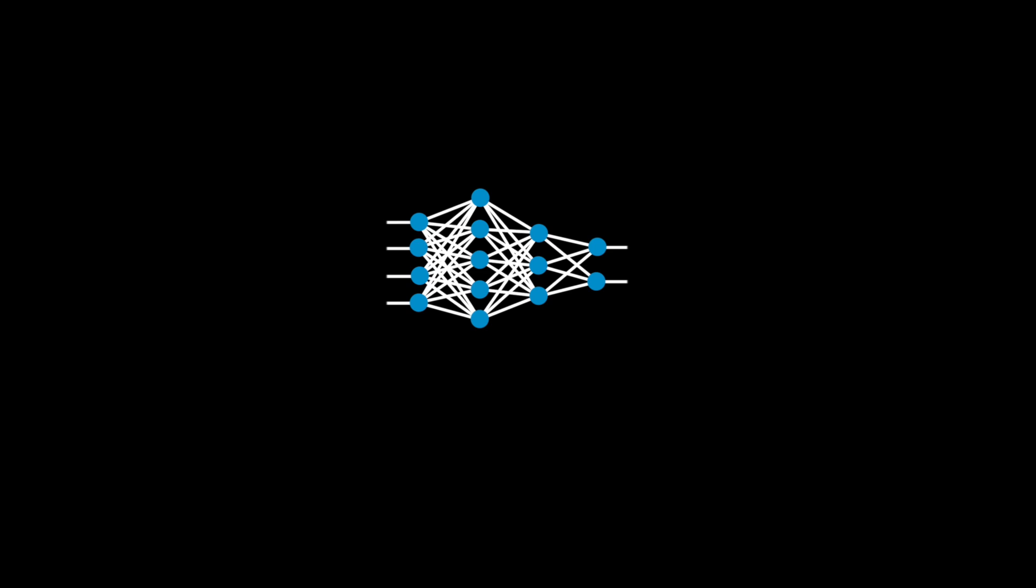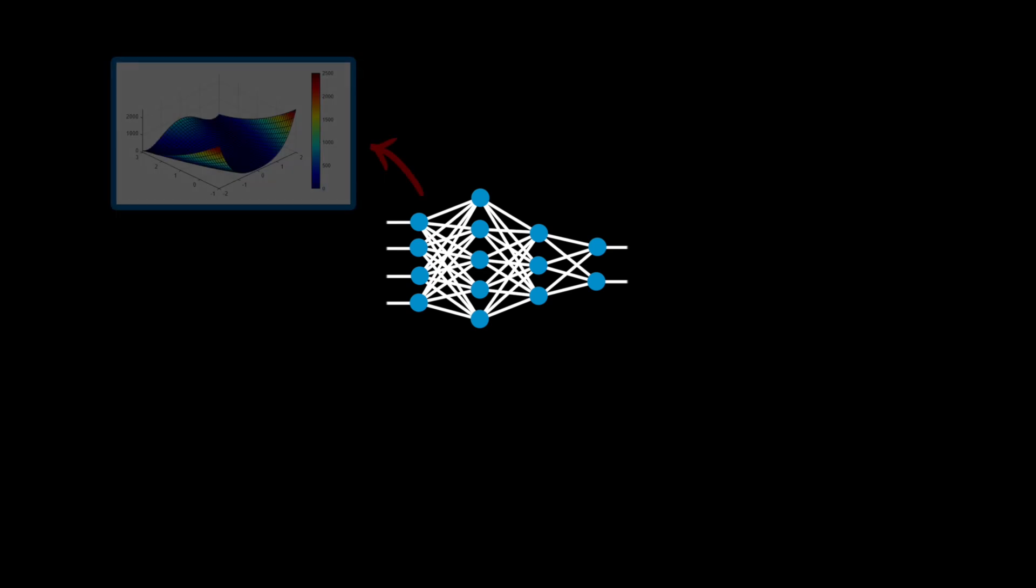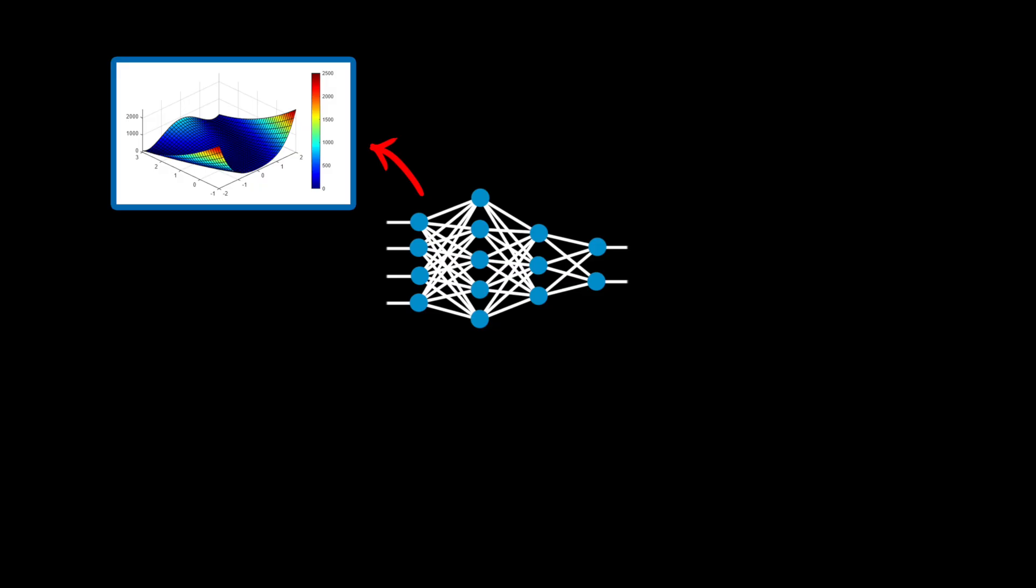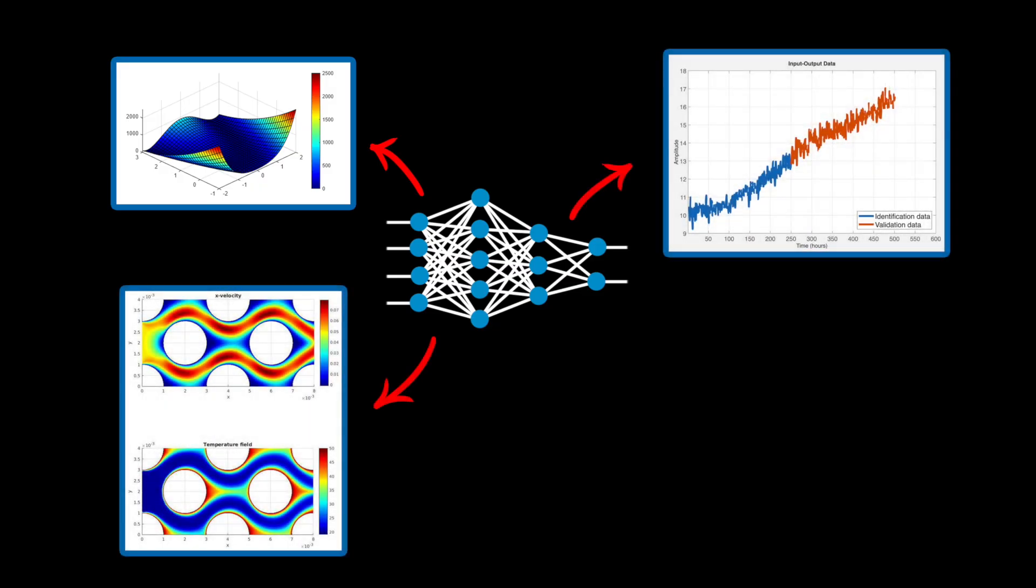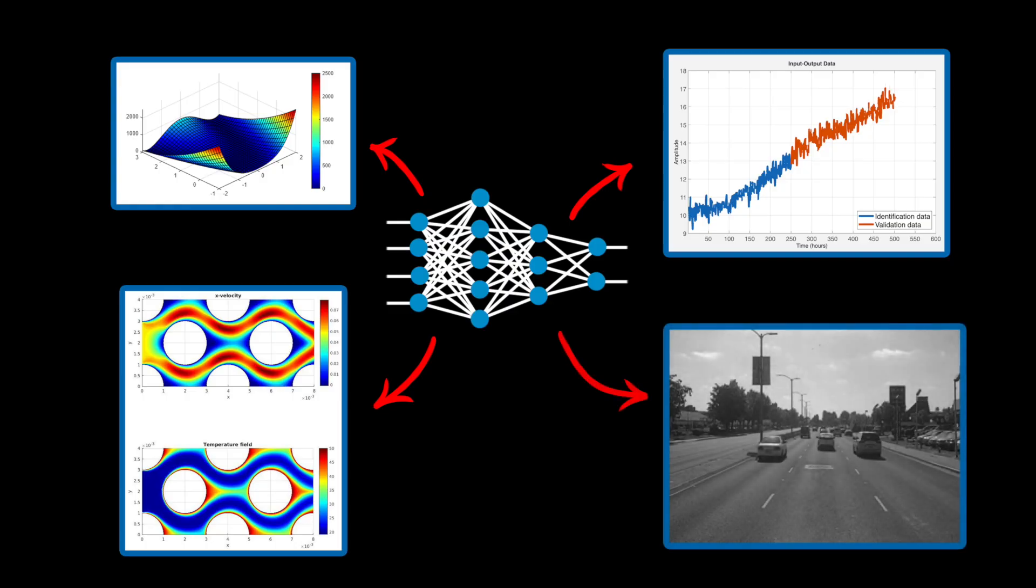Neural networks are really useful tools in engineering because of how versatile they are. They can model complex nonlinear systems, predict time series trends, find patterns in high dimensional data, and classify images all with impressive accuracy.